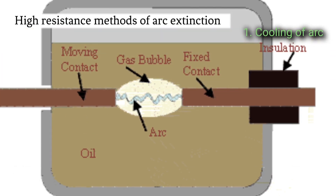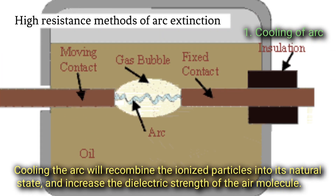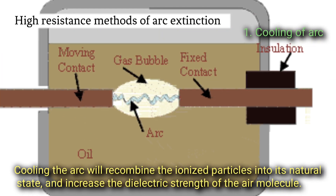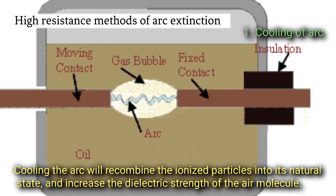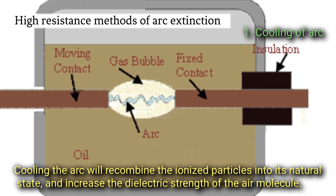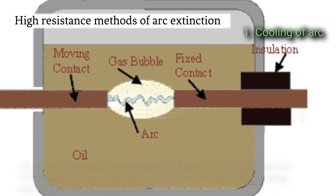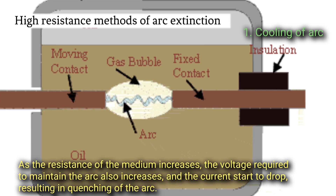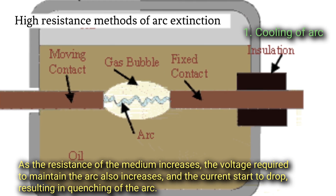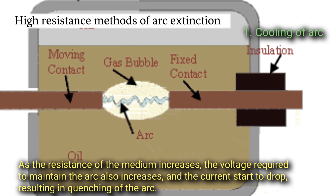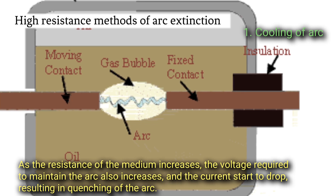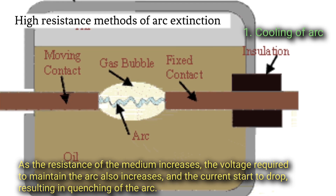Cooling of arc. Cooling the arc will recombine the ionized particles into their natural state and increase the dielectric strength of the air molecules. As the resistance of the medium increases, the voltage required to maintain the arc also increases, and the current starts to drop, resulting in quenching of the arc.